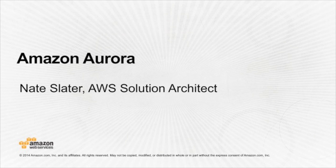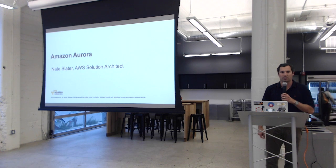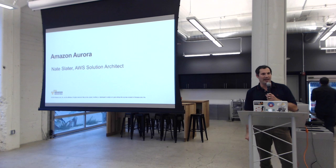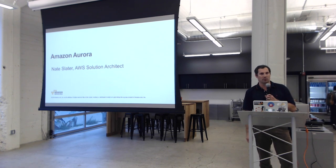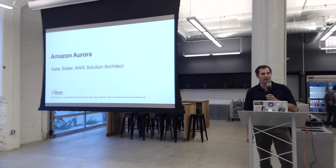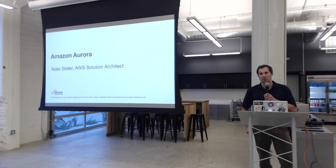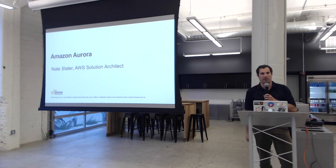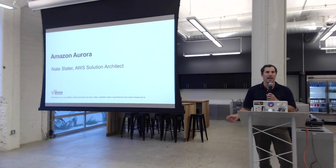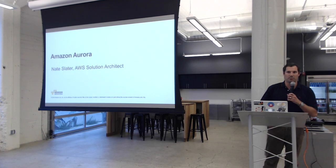Thanks for coming. My name is Nate Slater, an AWS Solution Architect working in San Francisco covering Bay Area accounts. Tonight we're going to talk about Amazon Aurora, a new relational database product announced at our reInvent conference in November 2014 in Las Vegas. The product is currently in beta and will hopefully be going to GA soon, with the expected launch date covered at the end.